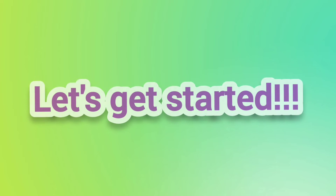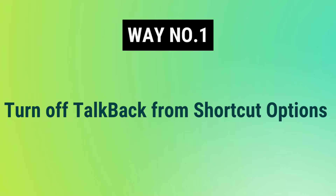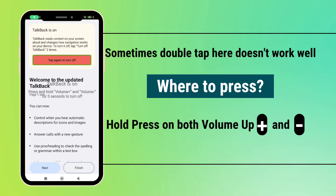Way number one: turn off TalkBack from the shortcut option. When you see TalkBack is on, the screen also shows you how to turn it off, just by pressing and holding both the volume up and down keys simultaneously for three to five seconds and it will be off.